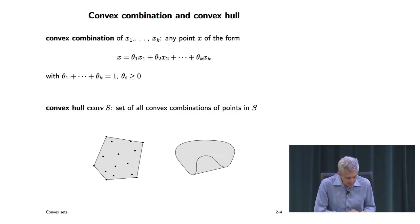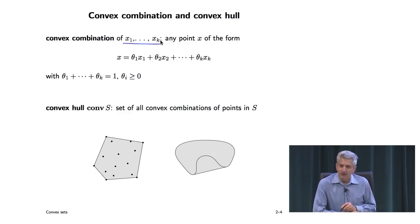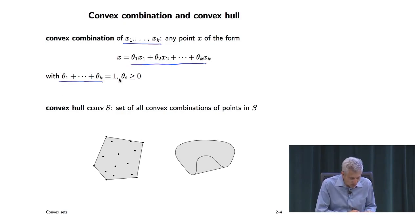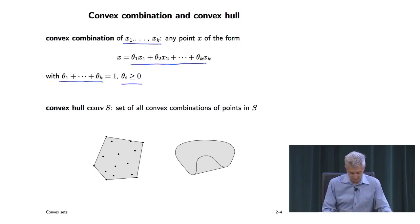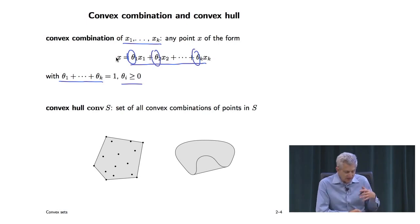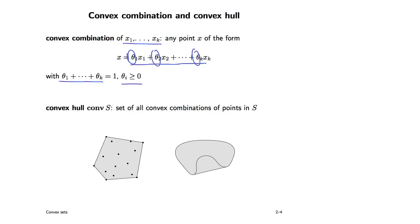A convex combination generalizes the line segment to k points. It's a linear combination of k points with coefficients theta_1 through theta_k that are non-negative and add up to 1. When k equals 2, it's exactly the line segment. You can think of the thetas as mixture coefficients — take 10% of x1, 0% of x2, and so on, with all percentages adding up to 1.